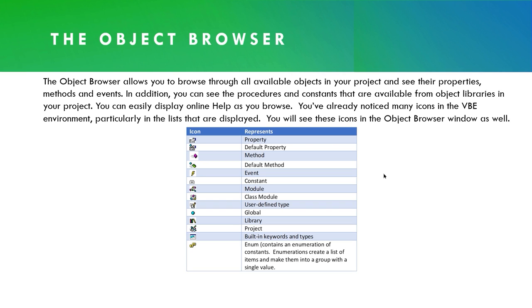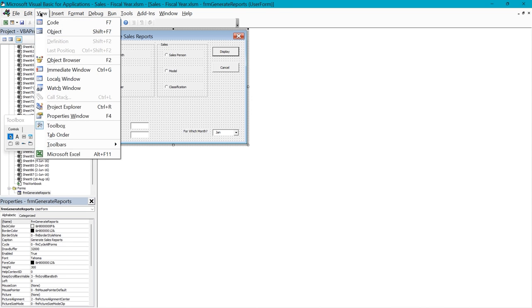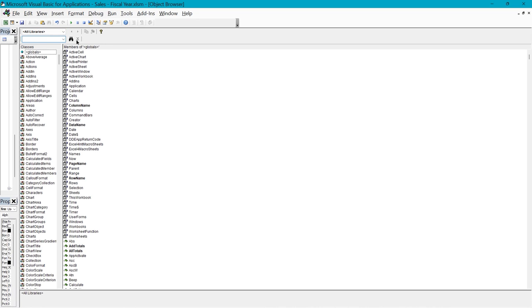The object browser allows you to browse through all available objects in your project and see their properties, methods, and events. In addition, you can see the procedures and constants that are available from object libraries in your project. You can also get online help as you browse in the object browser. You've already noticed some icons in the editor environment, particularly in the lists that are displayed — you'll see those icons in the object browser window as well. I've given you a table with the icons and what they represent.